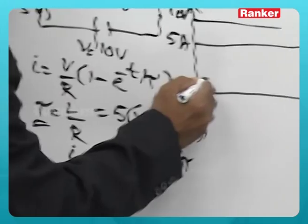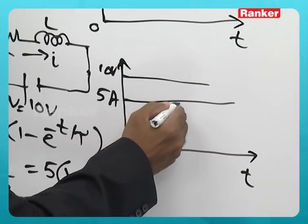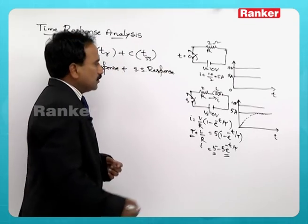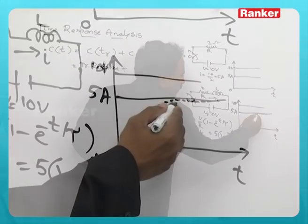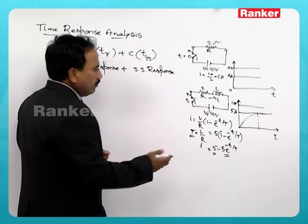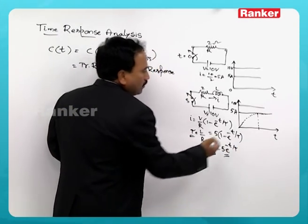Significance of time constant is how much time it takes for the current to reach 5 amperes. Now I will draw that the response in an RL circuit will be like this. You can see that there is an exponential increase for certain time that is given by 5 e power minus t by tau.